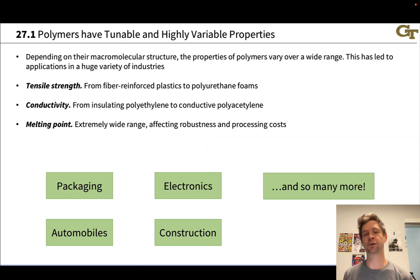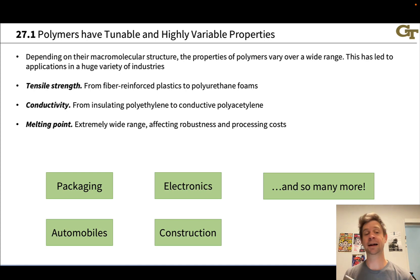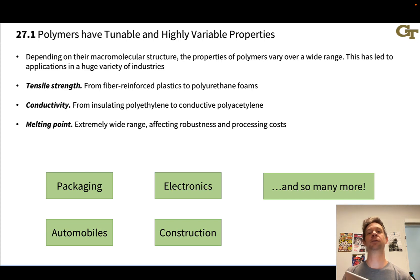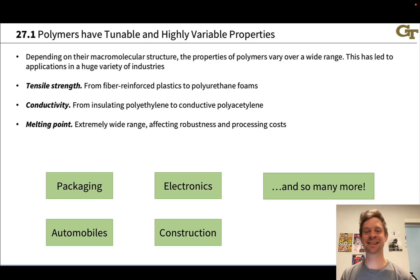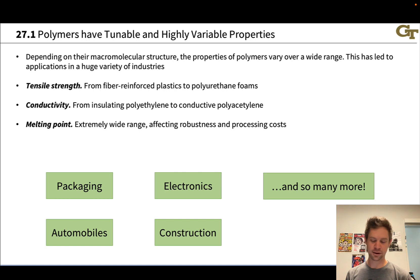Melting point spans an extremely wide range for polymers, affecting processing cost — can we melt the polymer down and mold it, and at what temperature? It also affects the robustness of the polymer and where it makes sense to use it in applications. At the bottom of the slide, we find some industries where polymers appear regularly: packaging, the electronics industry — for example, the OLED Nintendo Switch incorporates semiconducting organic polymers — the construction industry, and the automobile industry, and so many more.